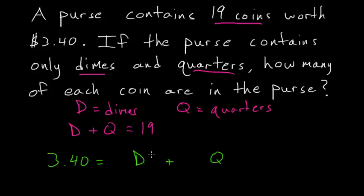Here we have to include that the number of dimes will be multiplied by 10 cents. So if we had nine dimes, that would be worth 90 cents. To represent that, we multiply by 0.1, and for quarters they're worth 25 cents, so we multiply by 0.25.